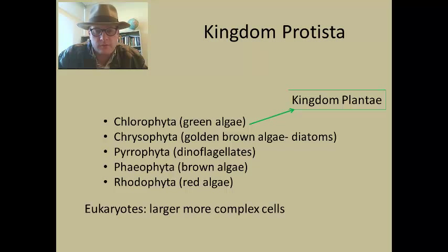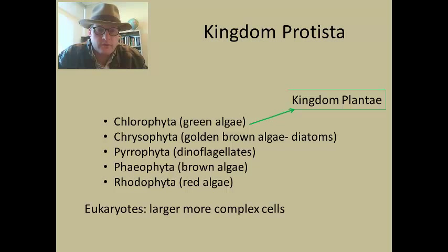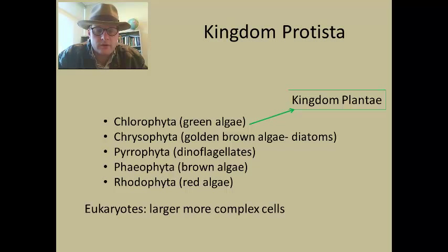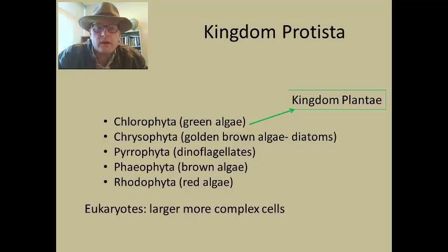There are a number of groups we're going to be talking about. The first group is the Chlorophyta, which is often referred to as the green algae. The Chlorophyta is the most closely related group to the kingdom Plantae — the vascular plants we have around us today. Other groups more distantly related to plants include the Chrysophyta, the golden brown algae, which also includes the diatoms; Pyrophyta, the dinoflagellates, sometimes referred to as fire algae; the Phaerophyta, the brown algaes; and the Rhodophyta, the red algaes.